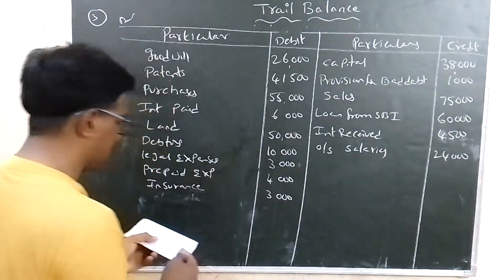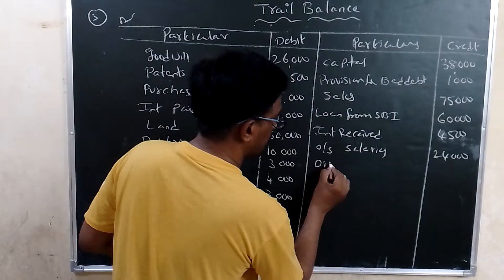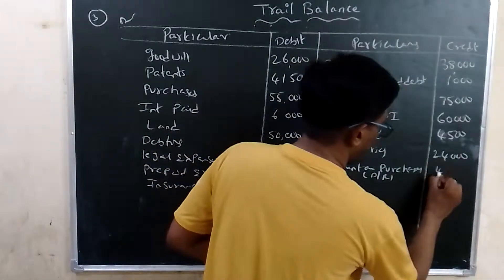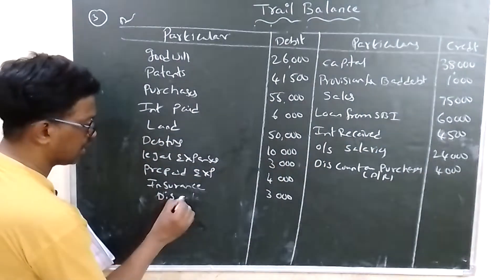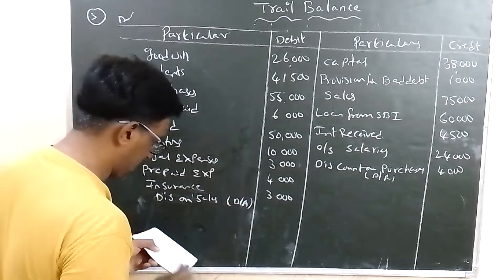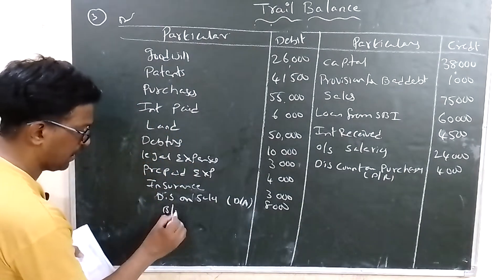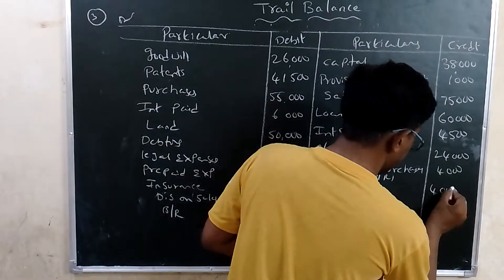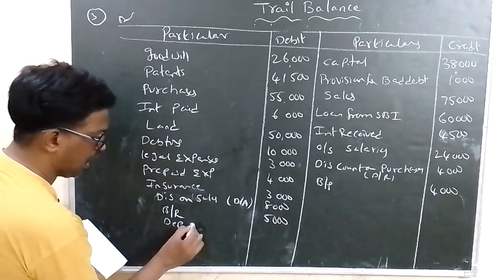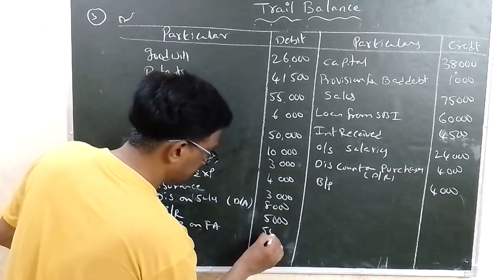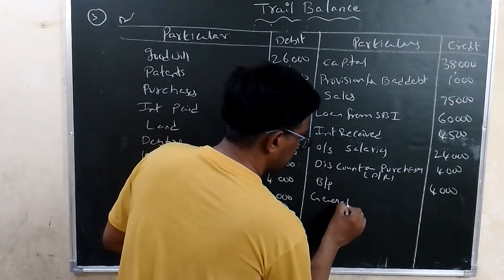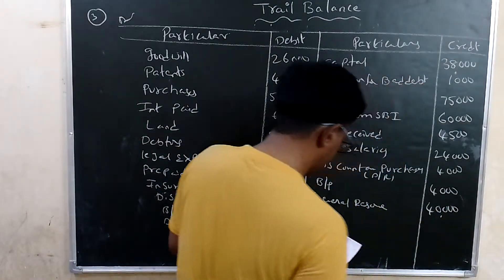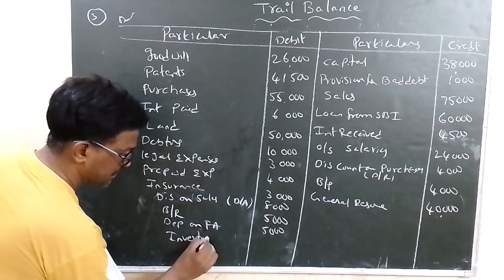Discount on purchases means discount received — credit, 4,000. Discount on sales means discount allowed — debit, 8,000. Bills receivable is an asset — debit, 5,000. Bills payable is a liability — credit, 4,000. Depreciation on fixed assets is a loss — debit, 5,000. General reserve shows credit balance — credit, 40,000. Investment is an asset — debit, 30,000.